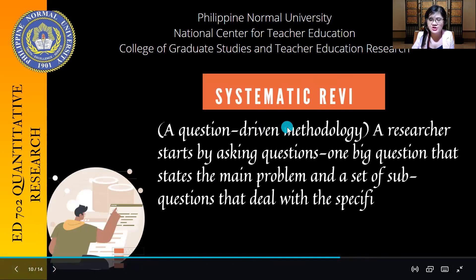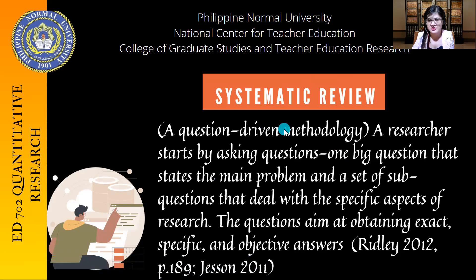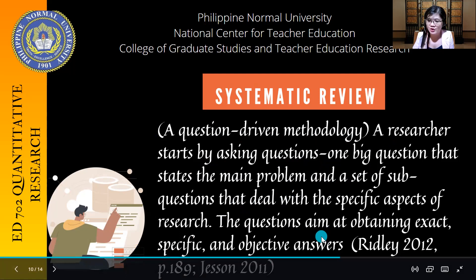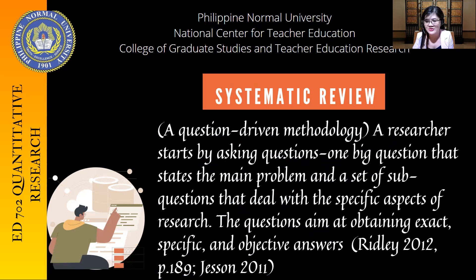A research literature review in quantitative research uses more of the systematic review. Systematic review is a question-driven methodology wherein a researcher starts by asking one big question that states the main problem and a set of sub-questions that deal with the specific aspects of research. The questions aim to obtain exact, specific, and objective answers. This is from Ridley 2012. So a systematic review aims to answer more specific and exact questions.